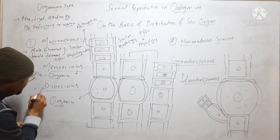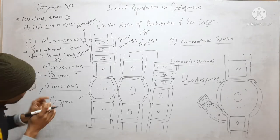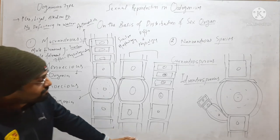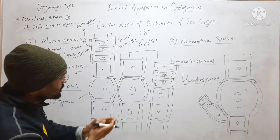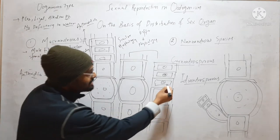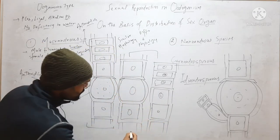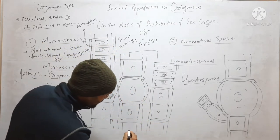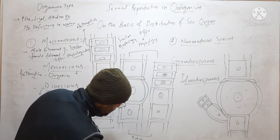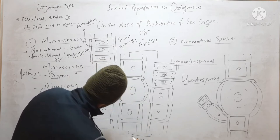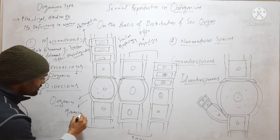The second type is dioecious. In dioecious, both filaments are different — the male reproductive structures, that is antheridia, are formed on a separate filament from the oogonia. So both these structures are formed on separate filaments. This is an example of dioecious.